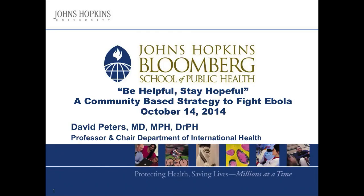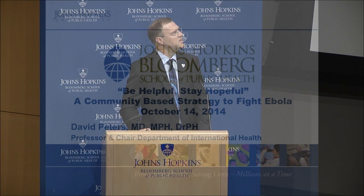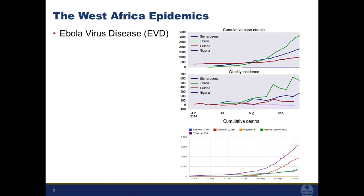Thanks very much. I'm pleased to talk about a community-based strategy to fight Ebola — an operation we've been privileged to be involved in. I want to first put it in a little bit of context. We see the Ebola virus disease at the center of this, and here is a picture of the emerging epidemic in terms of the number of cases and deaths. Although it started sometime in December, we're now in the exponential part of the curve, an increasing concern. Others will talk more specifically about the patterns, but it's not just about a virus — there are a number of other types of epidemics going on in West Africa.